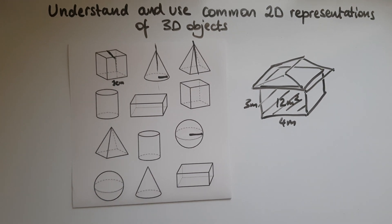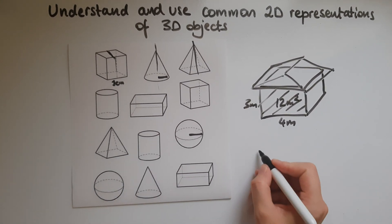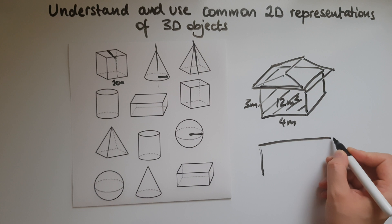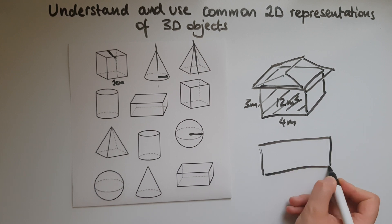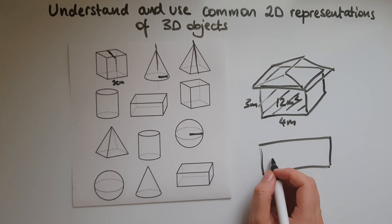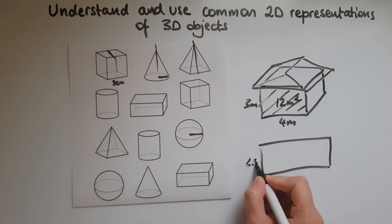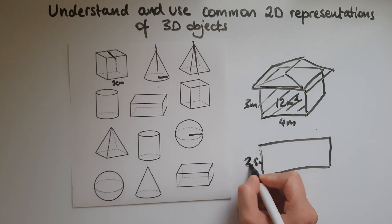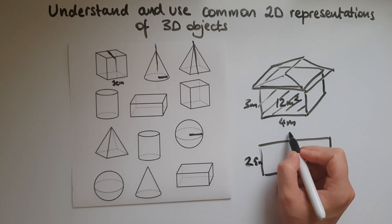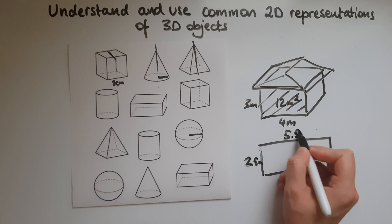There's also plan views and elevations. So if a top view or plan view of a garden looks like this, you know that it's going to be 2.5 meters this side and maybe 5.5 meters.